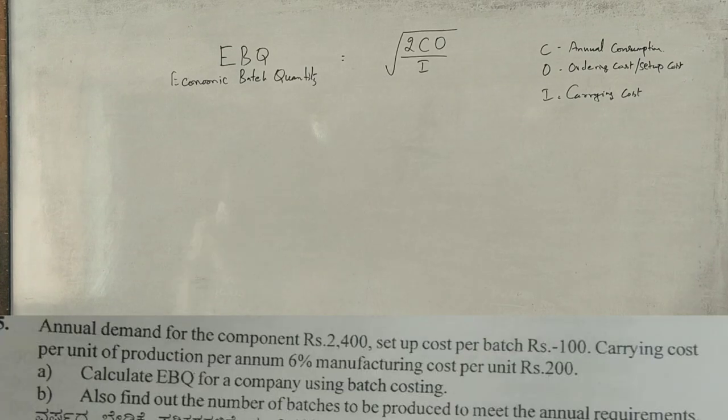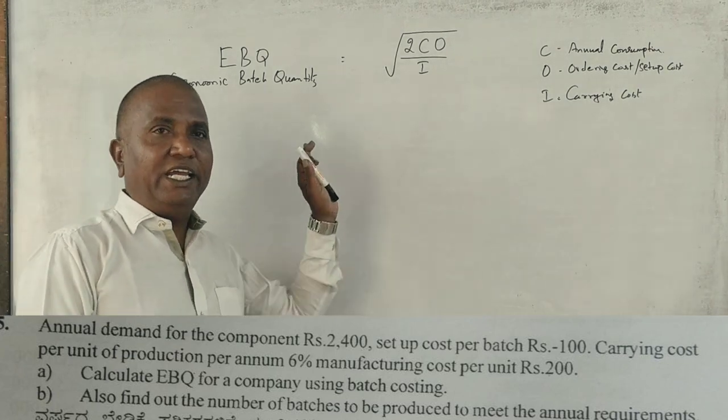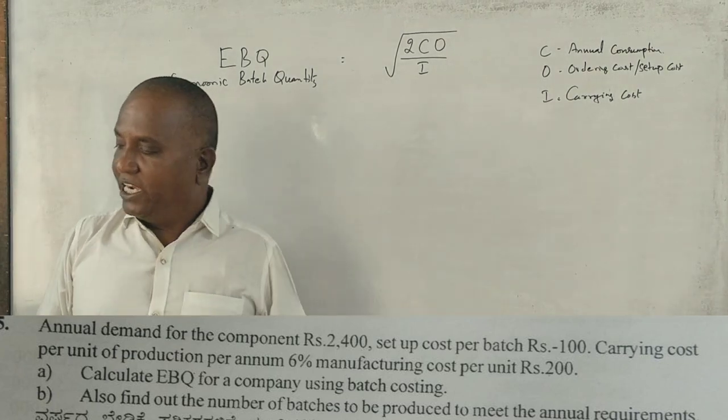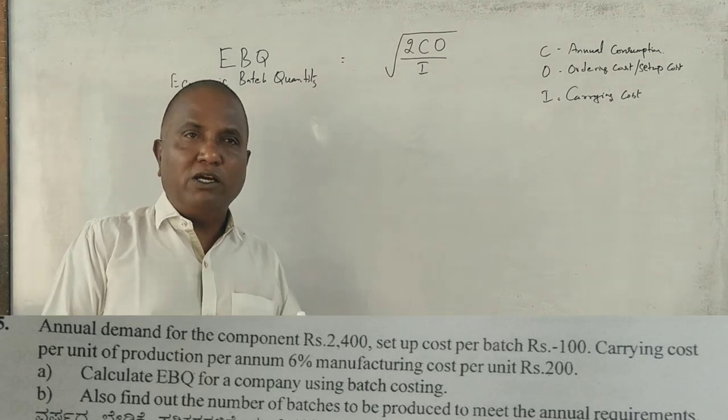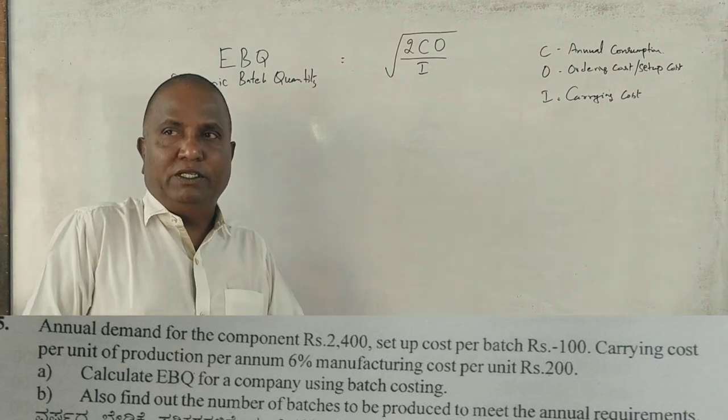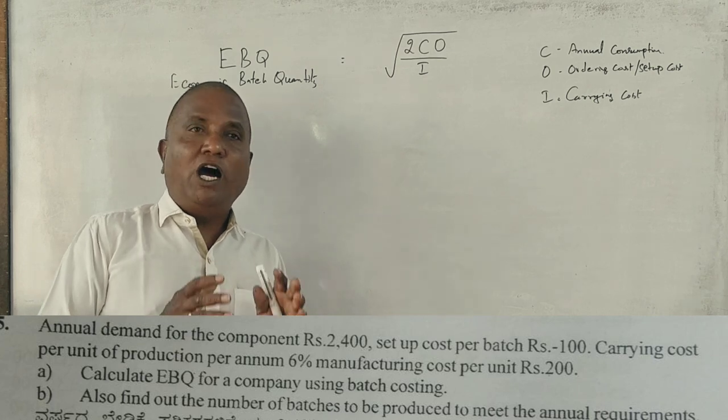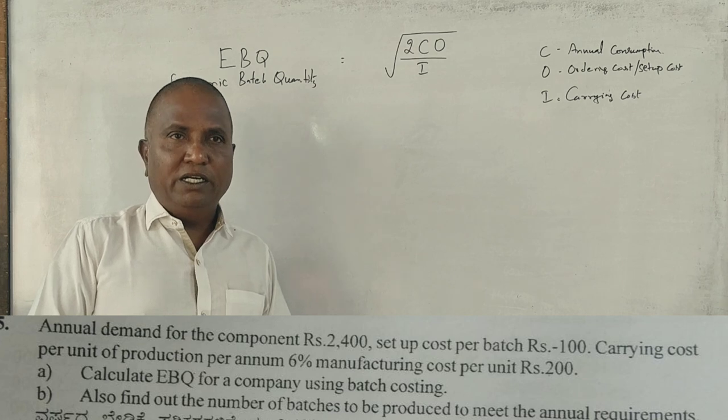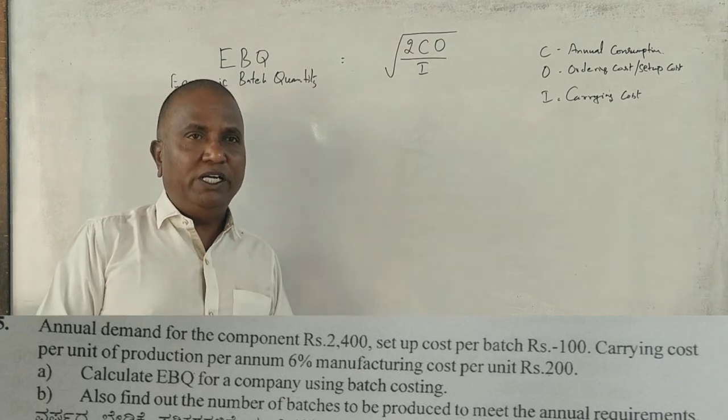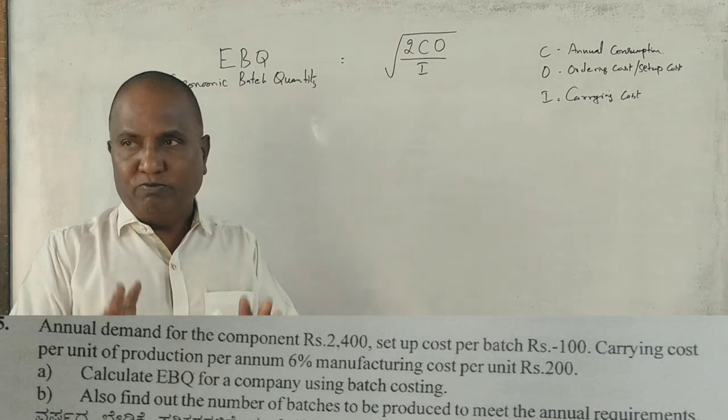2020-21, we have five marks EBQ, Economic Batch Quantity. What is the meaning of Economic Batch Quantity? How many batches if you manufacture in a year, it will be cheaper for you, it will be more economical for you.